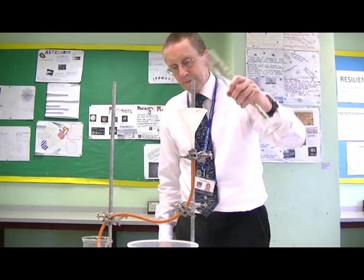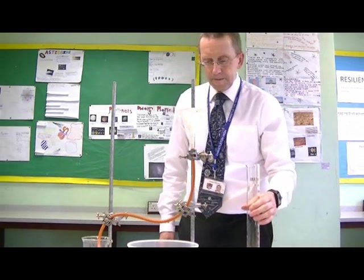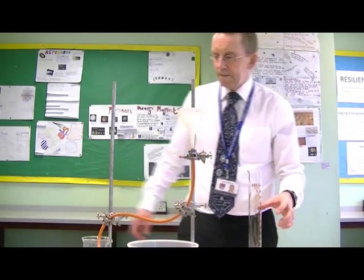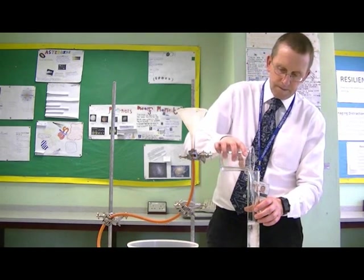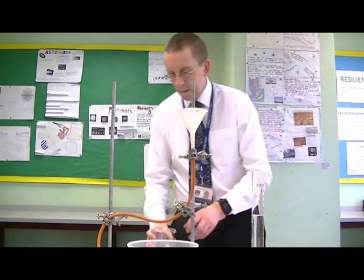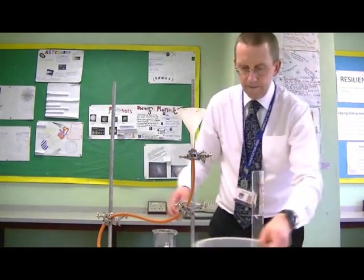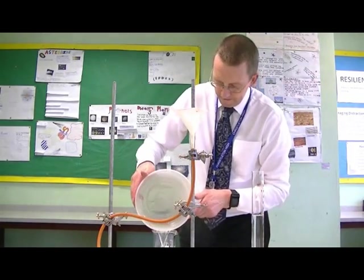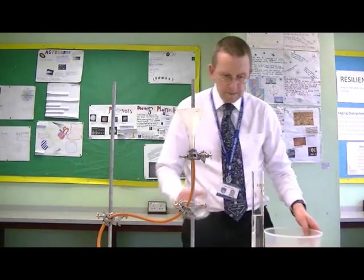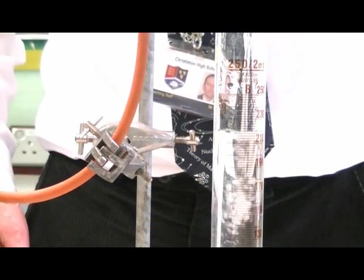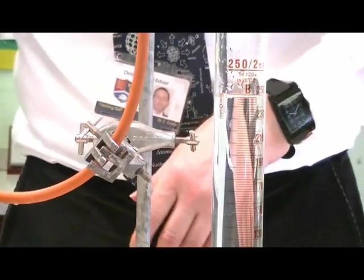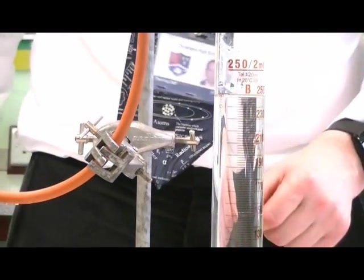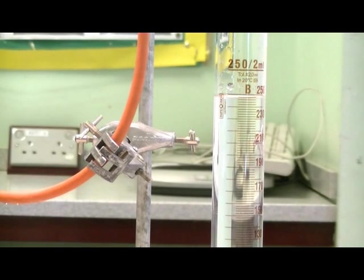I'm now going to use the model to find out how much energy has come out of the device as useful and wasted. Here's the useful energy output, and I'll add to that the wasted energy output — and it comes to 250 joules again. So the useful energy output and the wasted energy output are equal to the total energy that was input, so no energy has been lost.